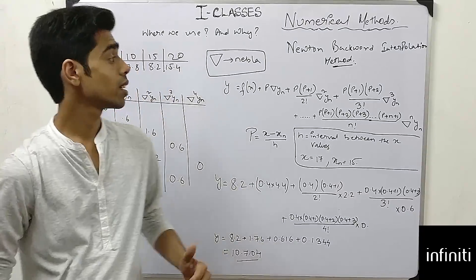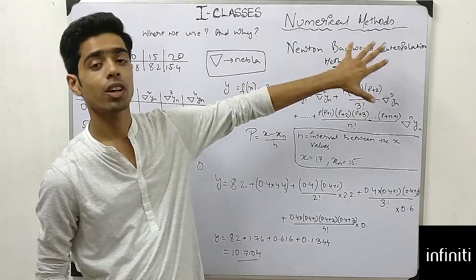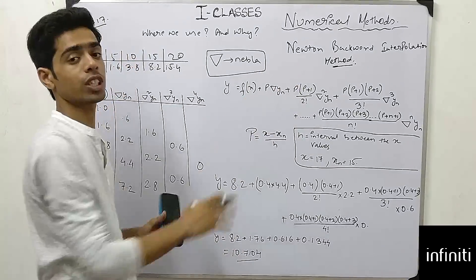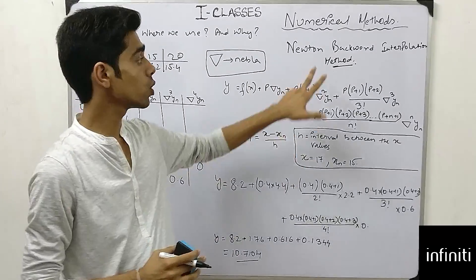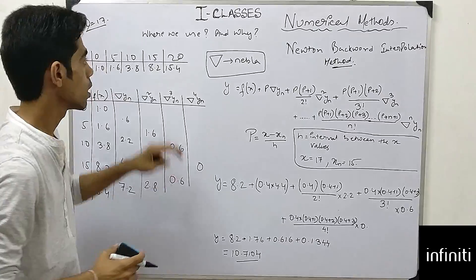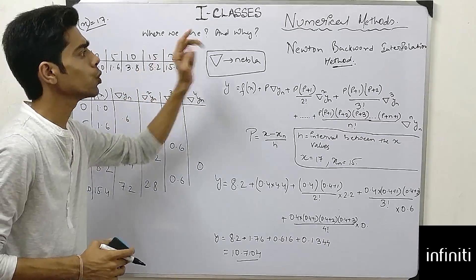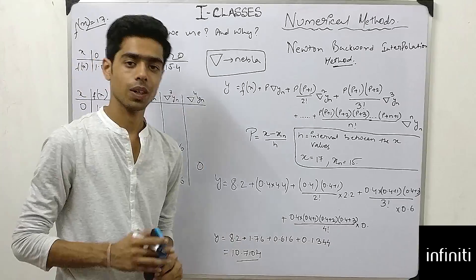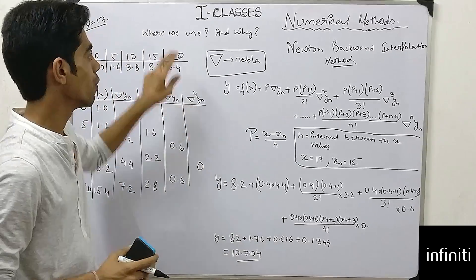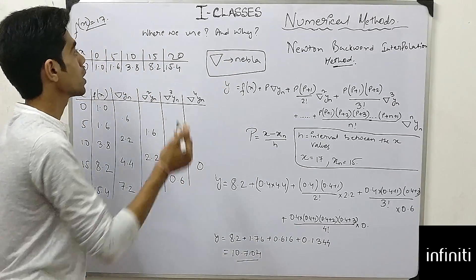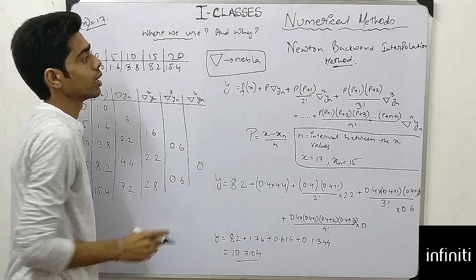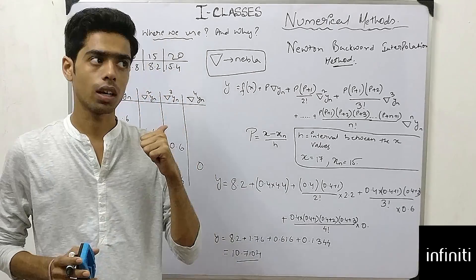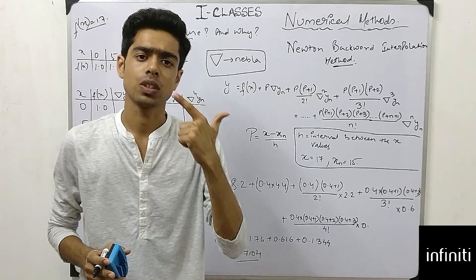Hello friends, today we are going to learn Newton's Backward Interpolation Method. The first question that comes to mind while reading about this method is: where do we use it and why? There are basically four types of interpolation methods: Newton's Forward, Newton's Backward, Lagrangian, and Newton's Divided Difference.